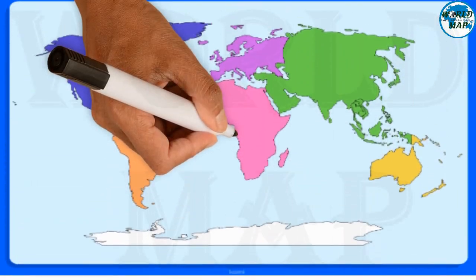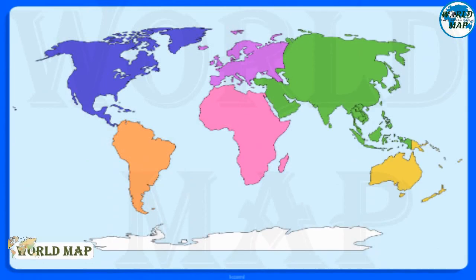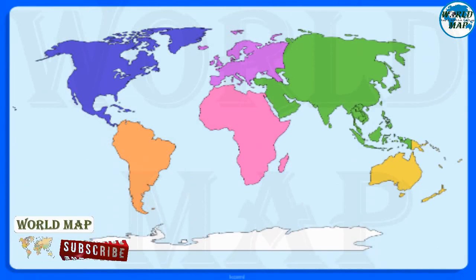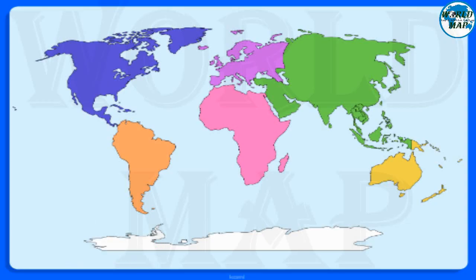A continent is one of Earth's seven main divisions of land. The continents are, from largest to smallest: Asia, Africa, North America, South America, Antarctica, Europe, and Australia.